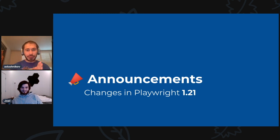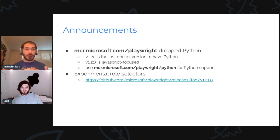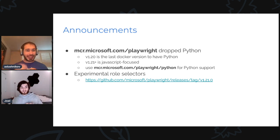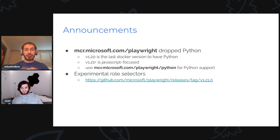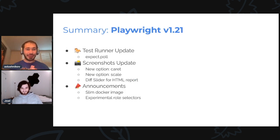And the last part of this video, we have a couple of announcements. First, our Docker image is now slim — we don't have Python anymore. If you do want to use Python, use mcr.microsoft.com/playwright/python. We warned everybody last release, and now we've actually made the change. The next announcement: we have experimental role selectors. If you know what they are and want to help dog-food them, give it a try — there's a link to the release explaining how to use it. We will tell you way more about this in Playwright 1.22. Summary: we have a universal retry assertion, new screenshot options for caret and scale, the new beautiful diff slider, slim Docker images, and experimental role selectors.